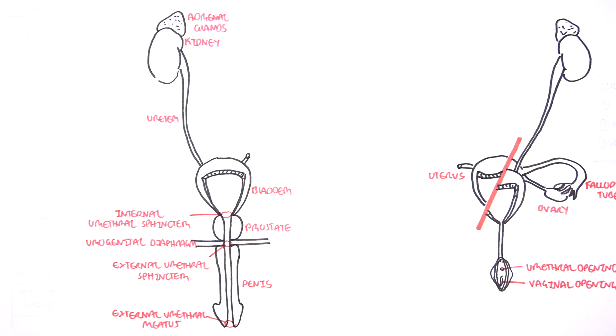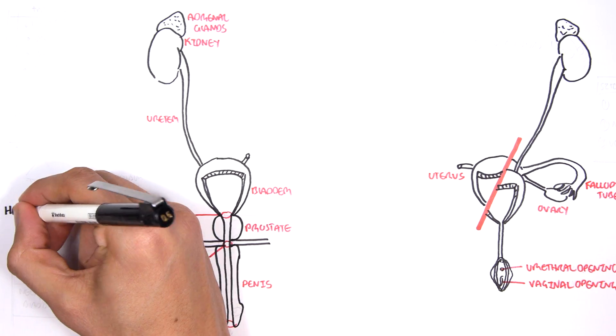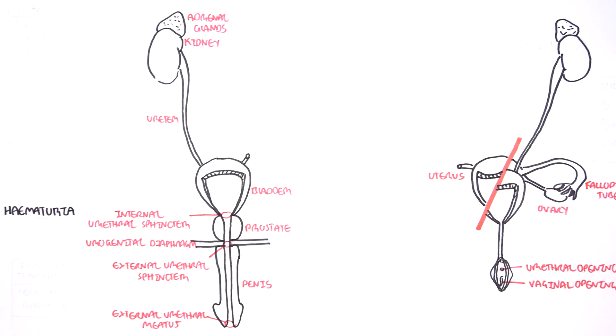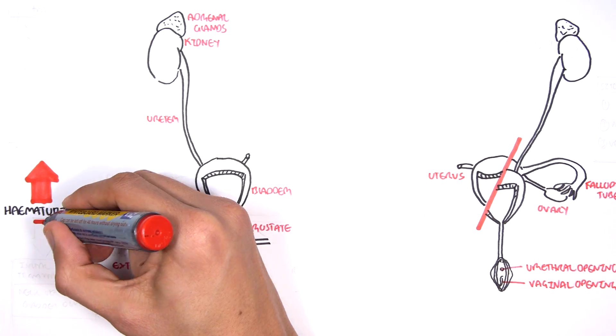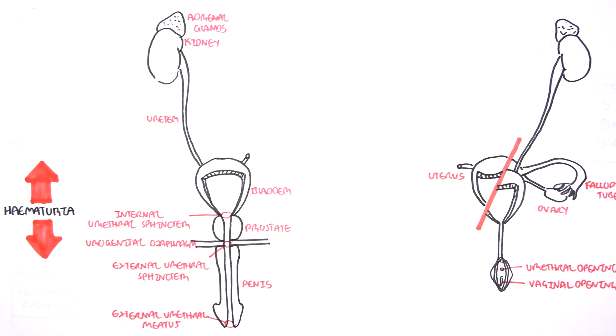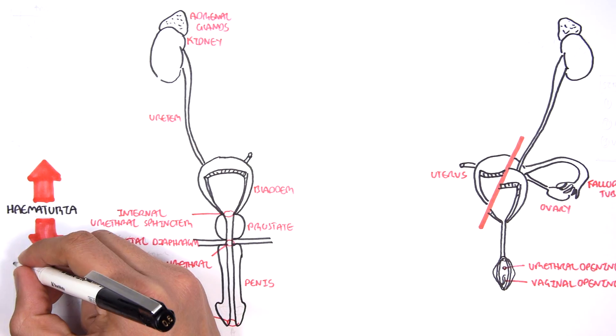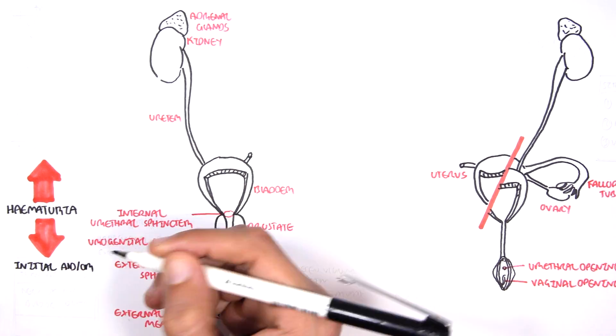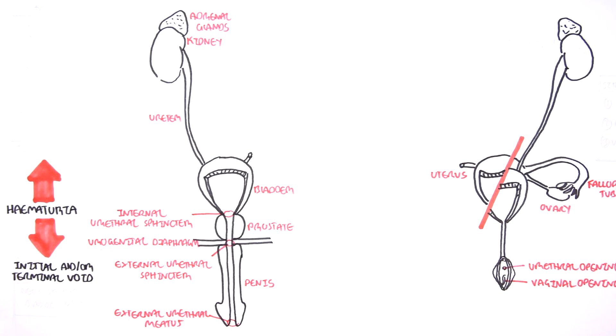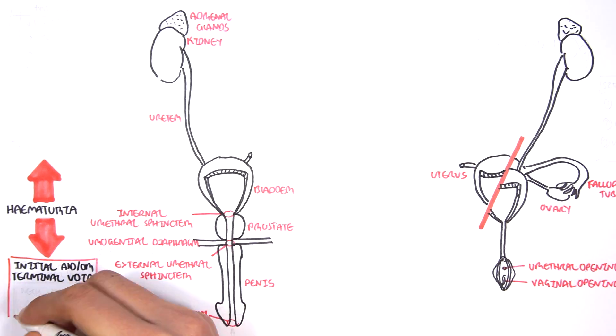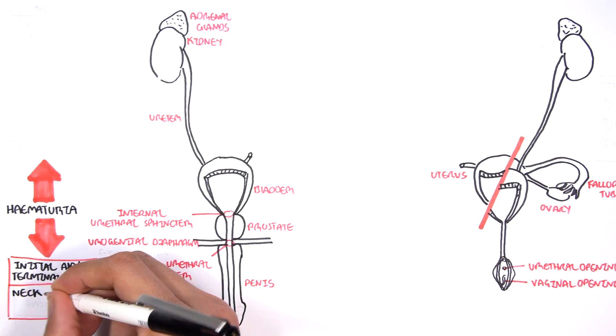Now let's just look at the causes of hematuria. Let's just use the male system here, the male urinary system. If someone presents with hematuria, it is important to ask them: do they notice the blood when they start peeing, at the end of peeing, or throughout?